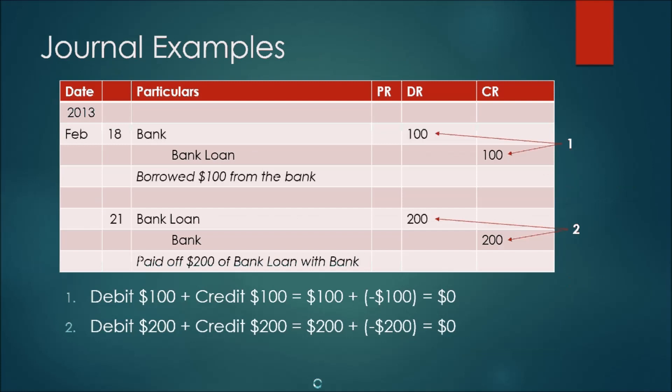In the journal examples: in the first, bank is debited or increased by $100 and the bank loan is credited or increased by $100 — $100 plus negative $100 equals zero. In the second, the bank loan is debited by $200 and decreased by $200, and the bank asset is credited or decreased by $200 — $200 plus negative $200 equals $0. In both cases owner's equity does not change, and if you notice in the journal, they're balanced.